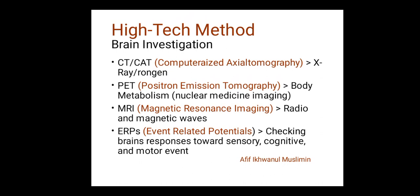The next high-tech method is MRI — Magnetic Resonance Imaging. Similar to how submarines use radio and magnetic waves to detect ocean depth and find resonance, MRI uses radio and magnetic waves to create an image of the surface of the brain. The last method is ERPs — Event-Related Potentials — used to check the brain's responses toward sensory, cognitive, and motor events.